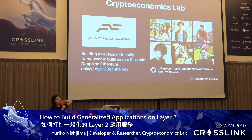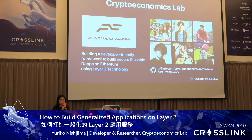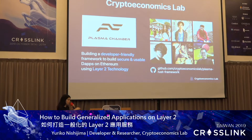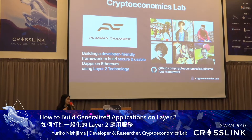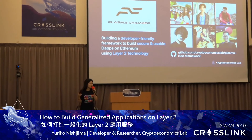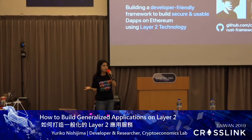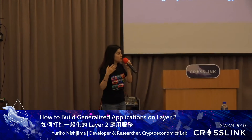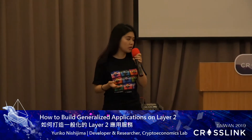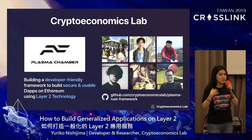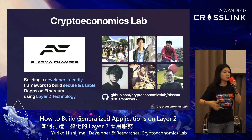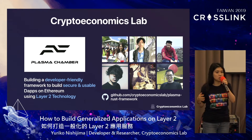Before we start, a little background on who we are and where we came from. CryptoEconomics Lab has six people in total. The R&D team consists of three people on the top row, including myself. The other three are in the adoption team, and they're in charge of running POC projects with clients, putting our R&D efforts and outcomes into practice with real use cases of Plasma.